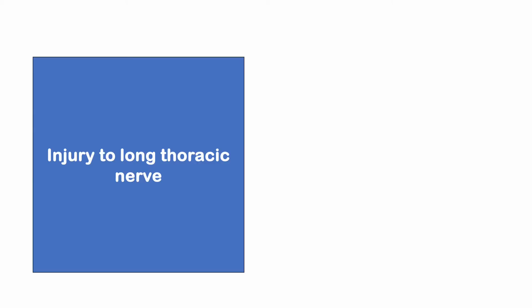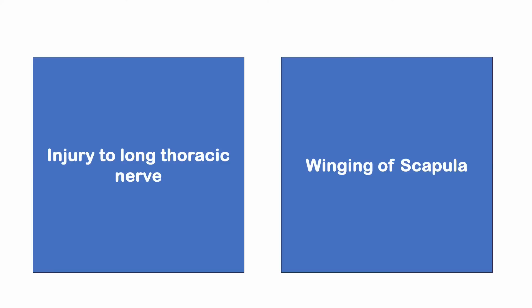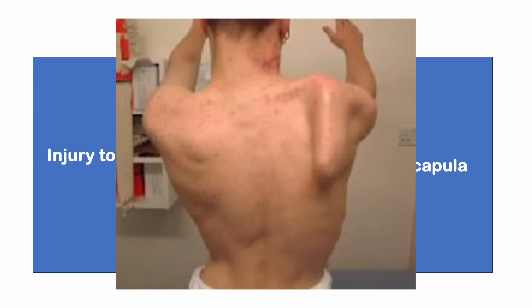Injury to the long thoracic nerve will cause paralysis of serratus anterior, which produces winging of the scapula. Injury to the nerve to serratus anterior or long thoracic nerve will give rise to winging of scapula — the visual cue is when the patient tries to press the wall, you see the winging of the scapula.